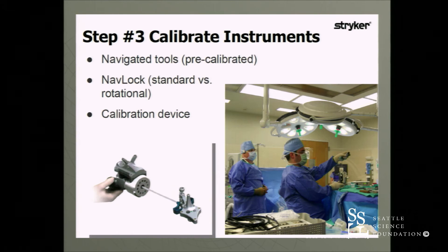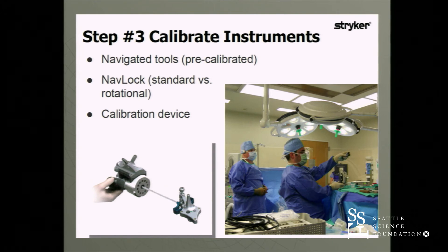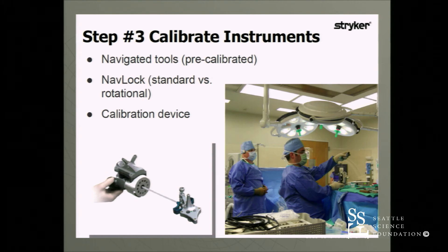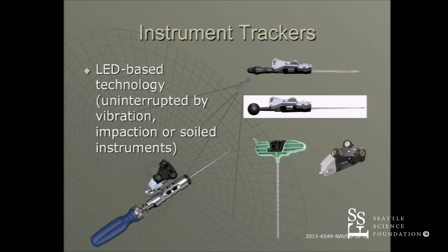The next step is to calibrate instruments. The benefit of the navigation system with the spine mask is you can calibrate and navigate really anything — there are pre-calibrated tools or you can calibrate on the fly. The instrument trackers are LED-based and uninterrupted by vibration, impaction, or if they're covered in body tissue.